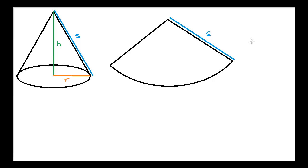Today I'm going to be talking about finding the surface area and volumes of cones. The surface area of a cone is a little bit tricky, so I'm going to do that second. The volume of a cone is fairly simple. In order to find the volume of a cone, what we have to realize is that the volume of pretty much every prismatic shape or prismatic pyramid is one-third of the volume of its prismatic shape.